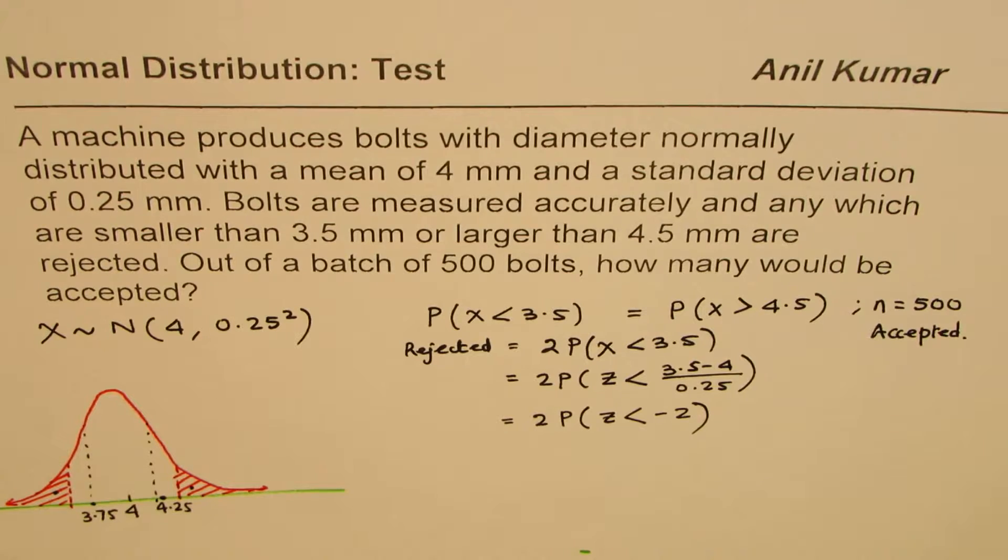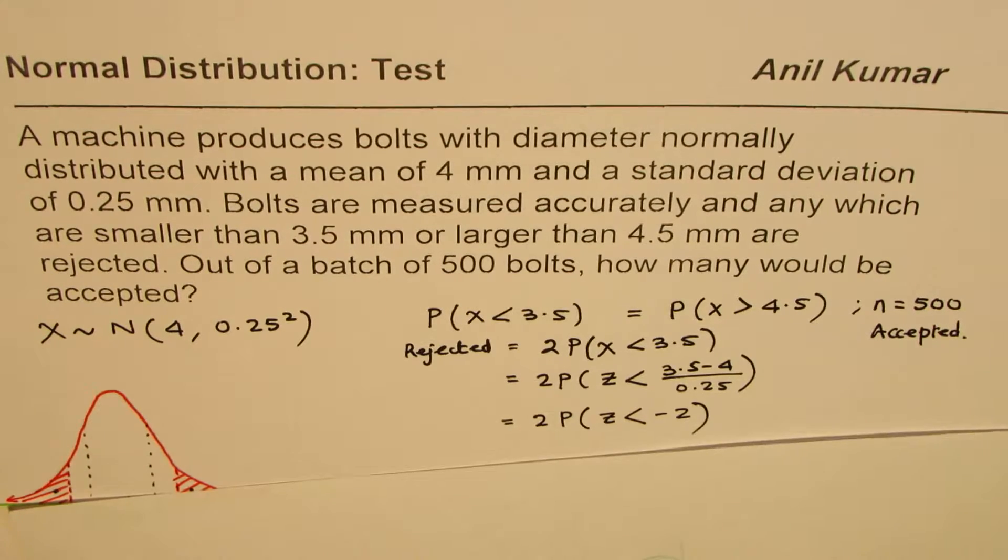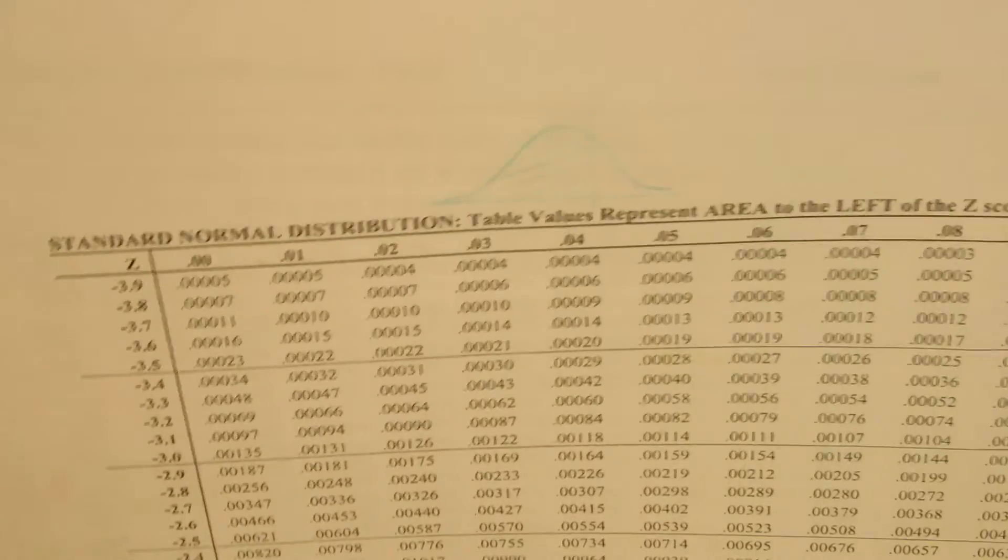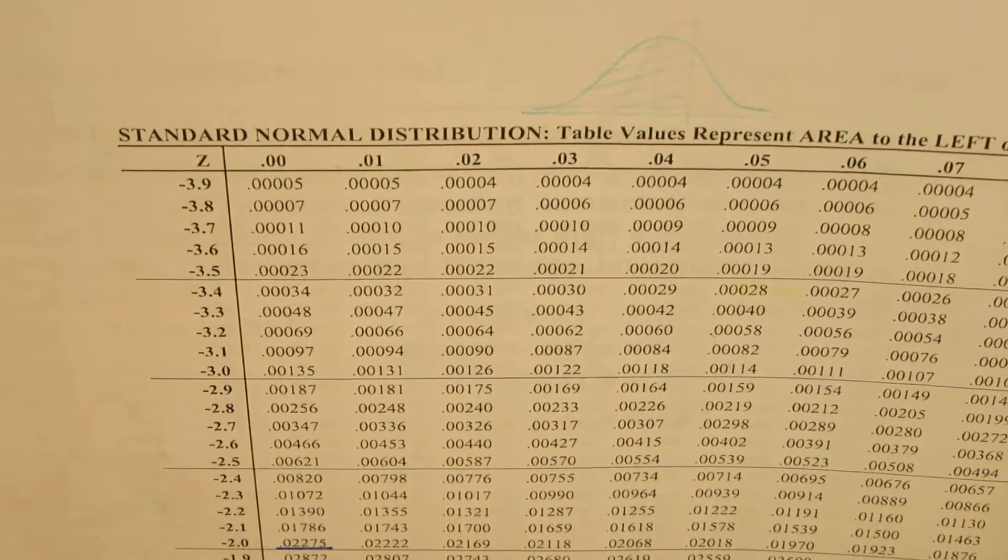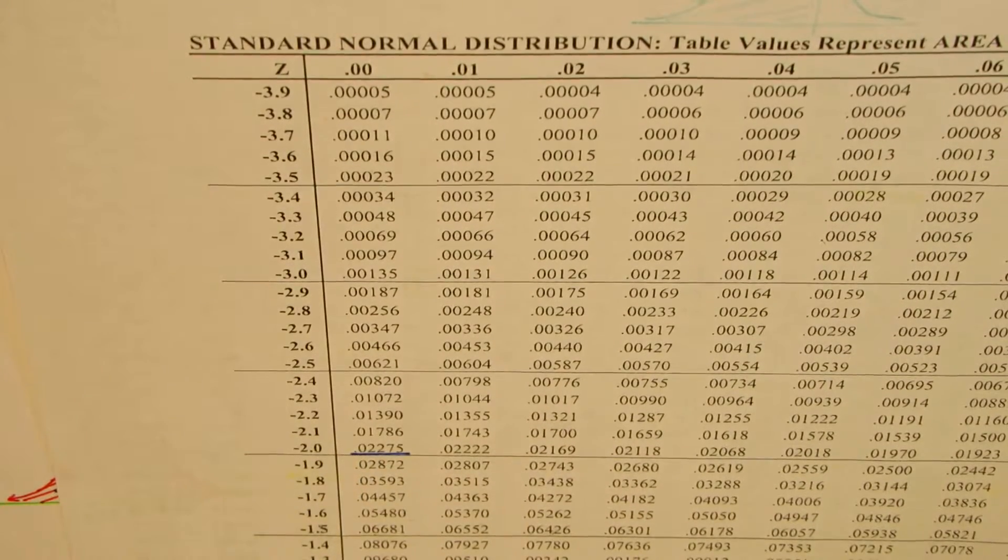Now to find this probability we can use standard normal distribution tables which are there in your book, you can use the calculator. So I have a printed copy here. We are looking for z less than minus 2.